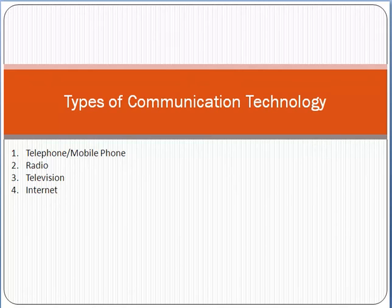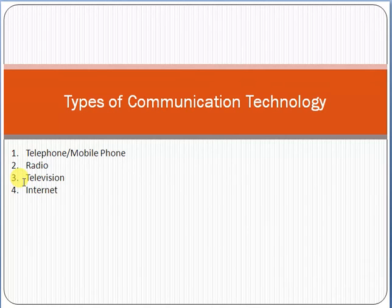Radio is another type of communication technology. It is a cheaper medium to distribute information. For example, if you want to give some advertisements, you can use radio because it is a cheaper medium. Nowadays it is still a very common medium and people continue to use it.